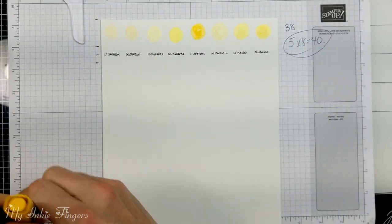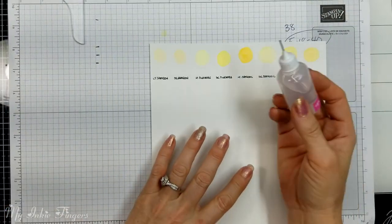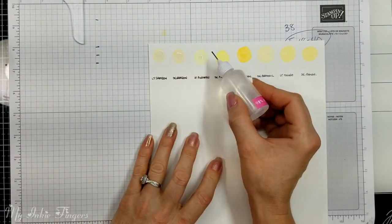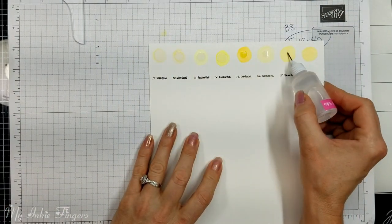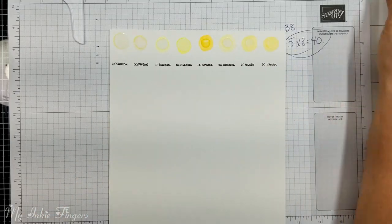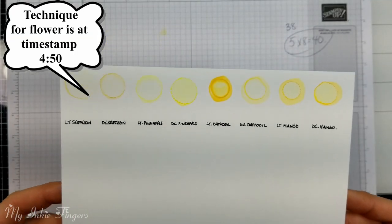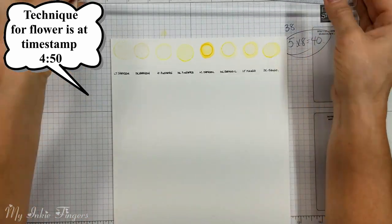So I'm going to go through and swatch all of this out so that I see what the actual colors look like when combined with alcohol. I'll put a time up right here so that you know where you can skip to if you want to just see how I made the card and you don't want to see the swatching.